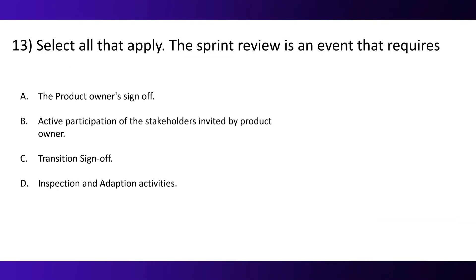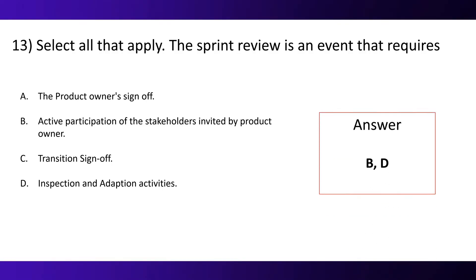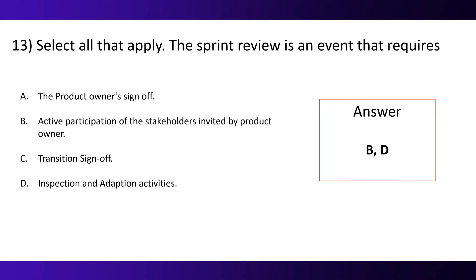Question 13. Select all that apply. The sprint review is an event that requires: Option A, the product owner's sign-off. Option B, active participation of the stakeholders invited by the product owner. Option C, transition sign-off. Option D, inspection and adaptation activities. And the correct options are B and D.